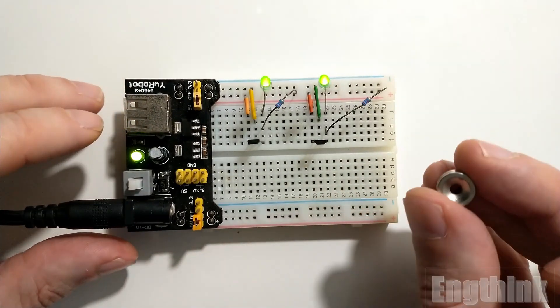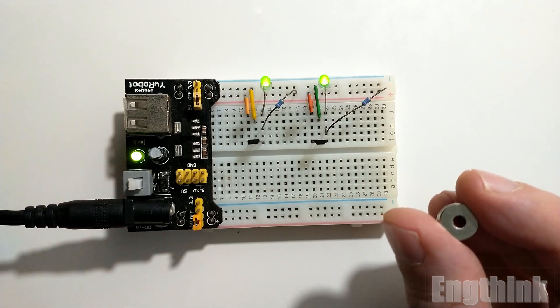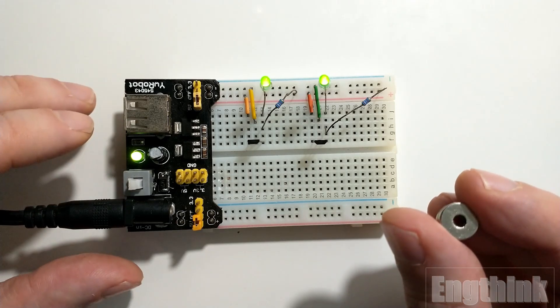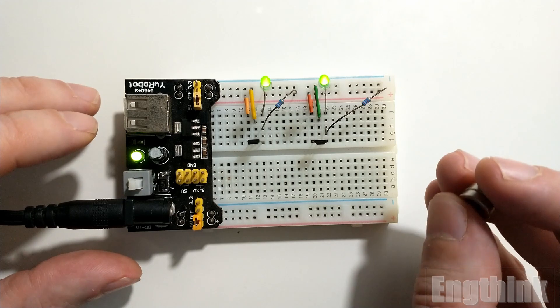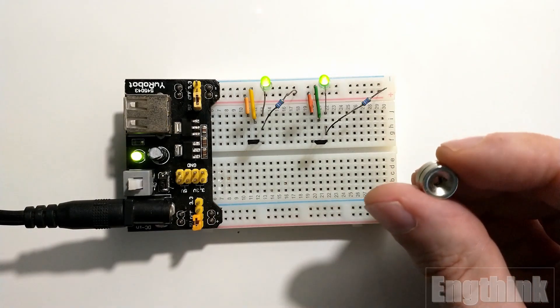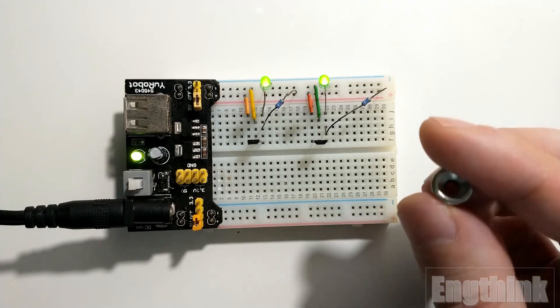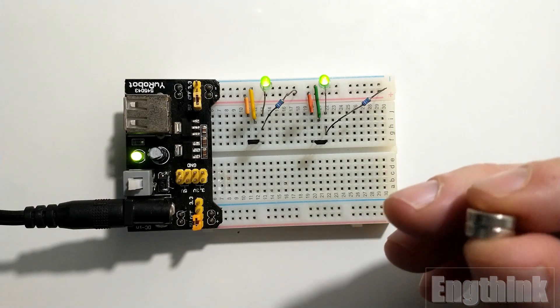To make the magnetic field, we need something to generate that, and for this case I will use this neodymium magnet. First of all, I'm going to test the sensor on the right side, which is the unipolar model with the code 3144.